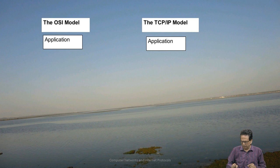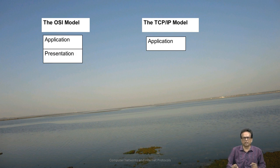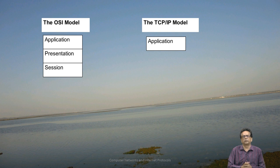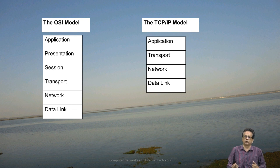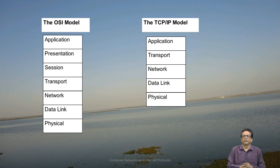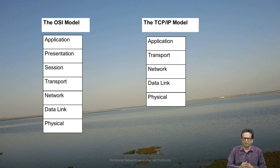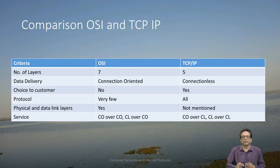There is one critical difference between the OSI model and the TCP/IP model, which is being highlighted. The application layer is common in both OSI as well as TCP/IP, but the OSI model has presentation and session layers which do not exist in the TCP/IP model. Transport layer, network layer, data link, and physical layer all exist in both models. In TCP/IP, data link and physical are combined together in the form of the network card, but we will still talk about these two as layers because functionally they are different.